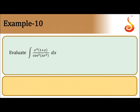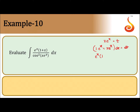We have cos squared x times e to the power x. Let x·e to the power x equal t. Differentiating: 1 times e to the power x plus x times e to the power x dx equals dt. Taking e to the power x as common, we get e to the power x times (1 plus x) dx equals dt.